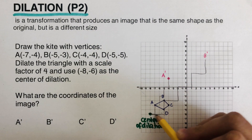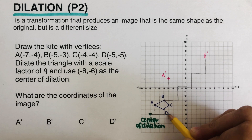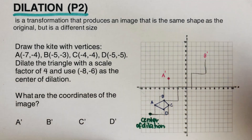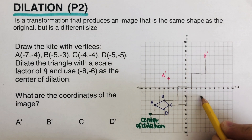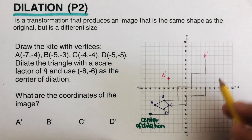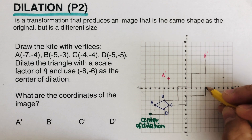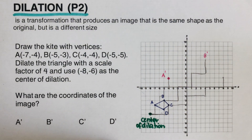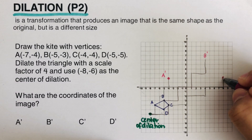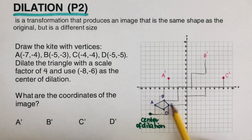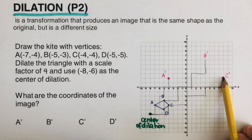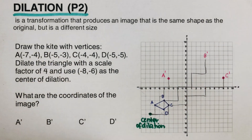For point C, the distance from the center of dilation is four units over two. We apply that distance four times to locate C prime. Counting from the center of dilation to C prime confirms it is four times farther than C, matching the scale factor of four.